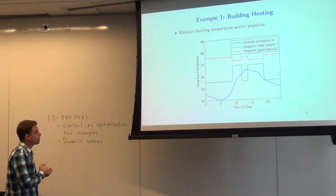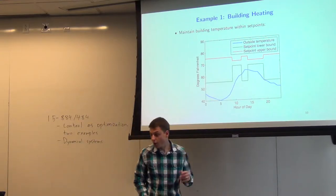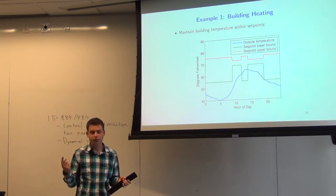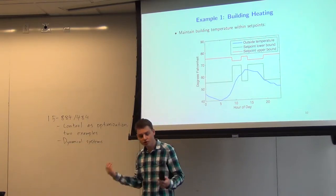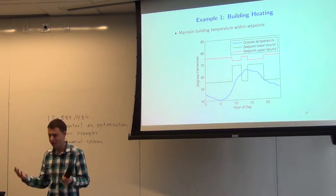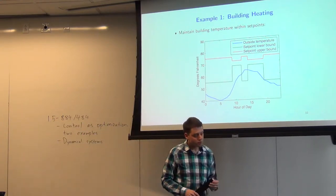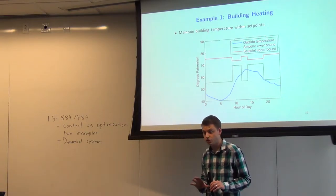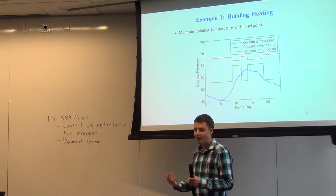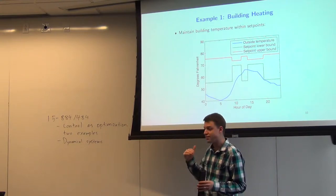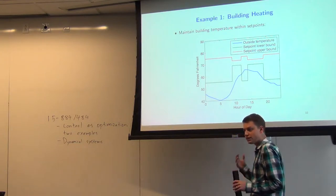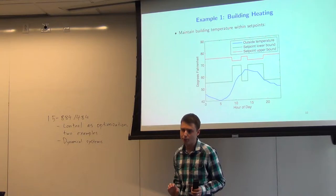The first example is building heating. The basic problem is very simple: we want to control the temperature in a room in a building. We want to maintain some notion of comfort when the room is occupied and save energy subject to that comfort constraint. Comfort can be defined either as a cost — like squared error between desired and actual temperature — or as actual constraints on the allowable temperature in the room.